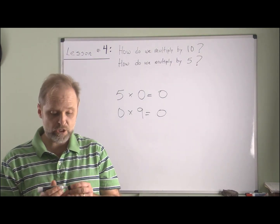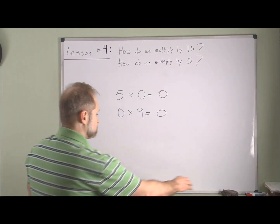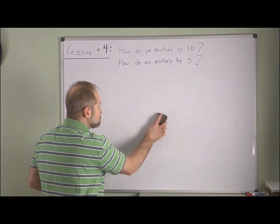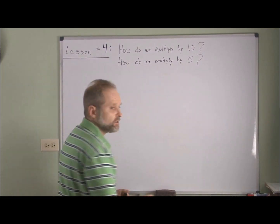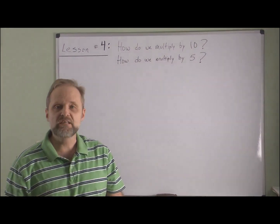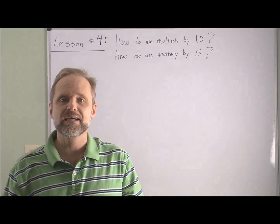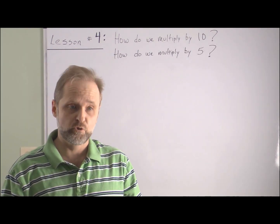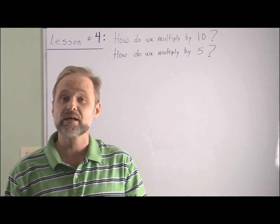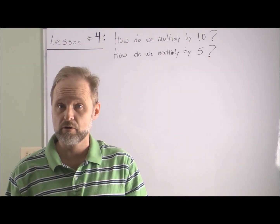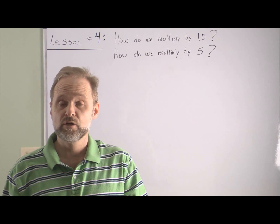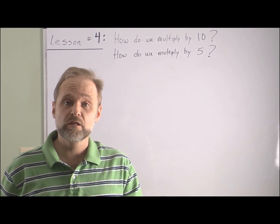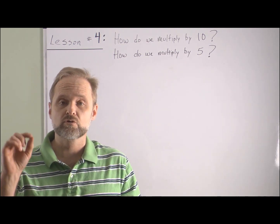The second thing is multiplication by two. Multiplication by two is easiest understood by skip counting. Hopefully you've been able to practice skip counting, and if you skip count correctly by twos, you're going to end up doing this.